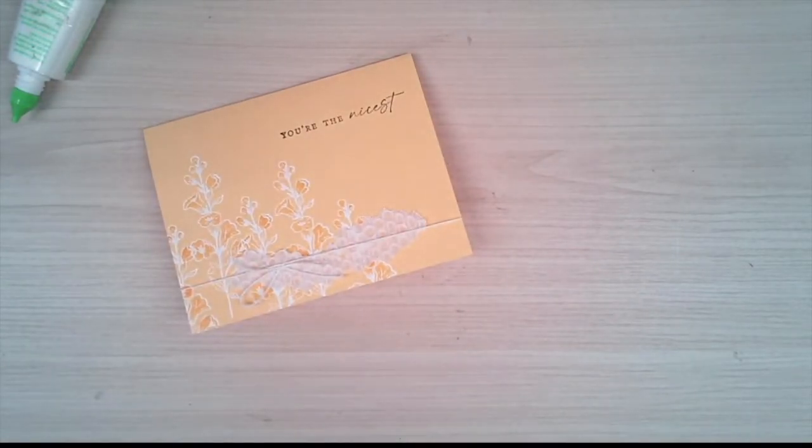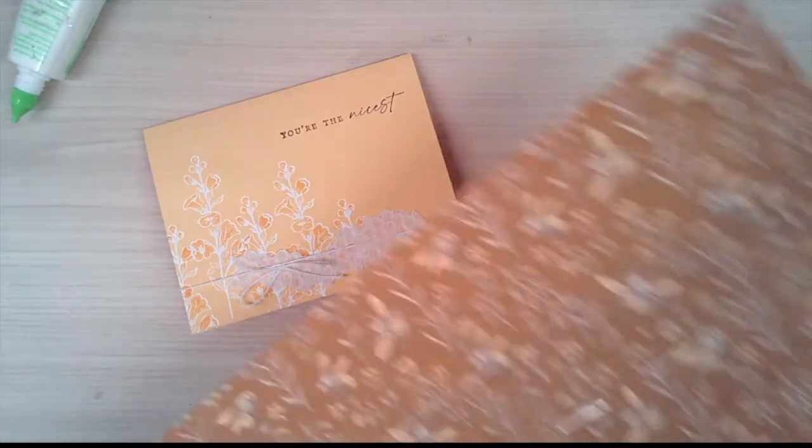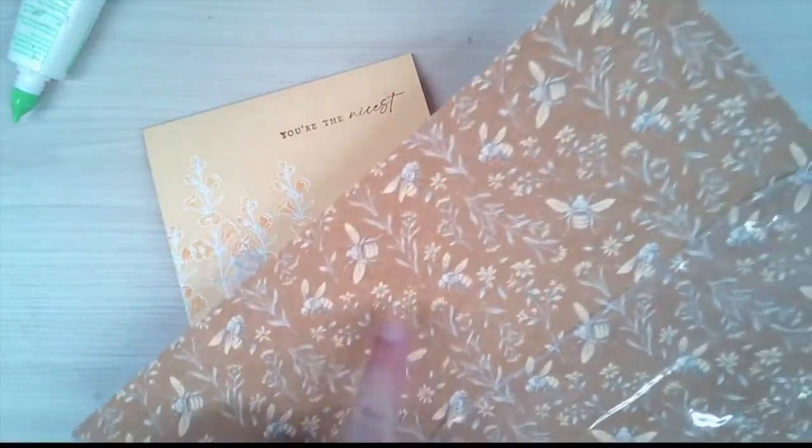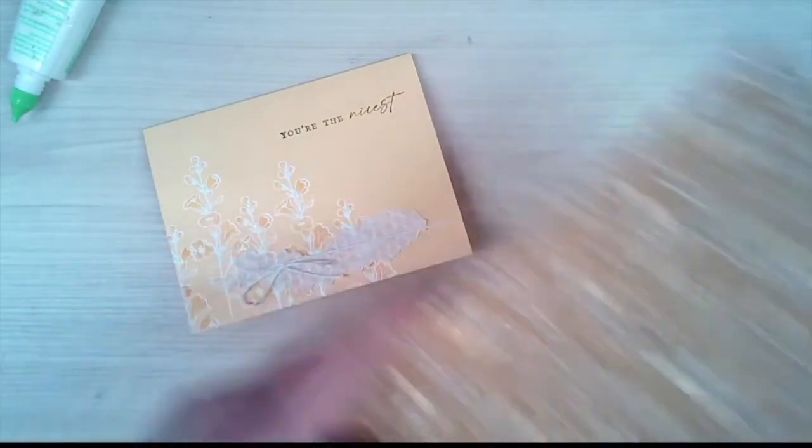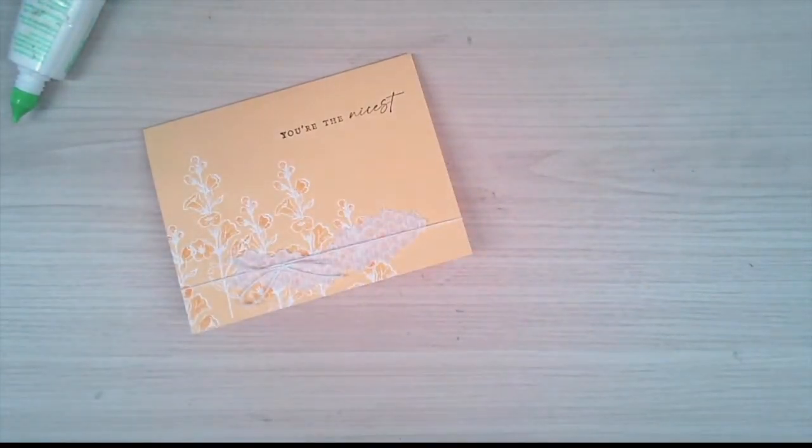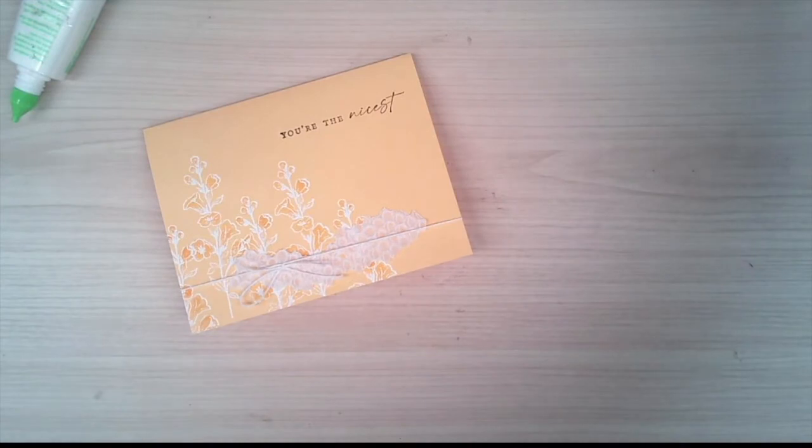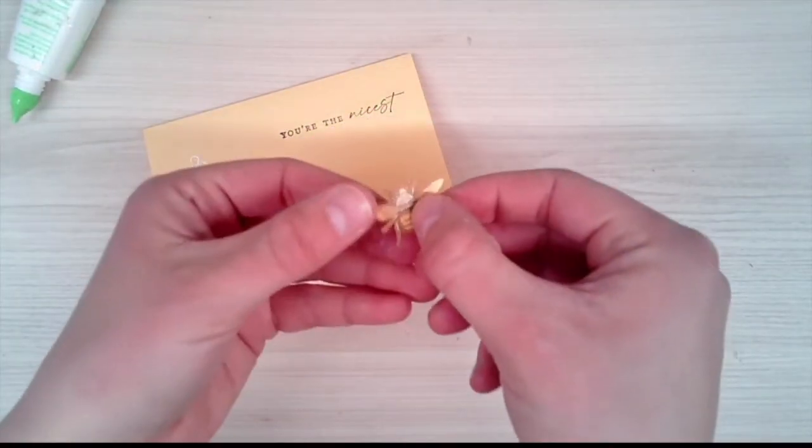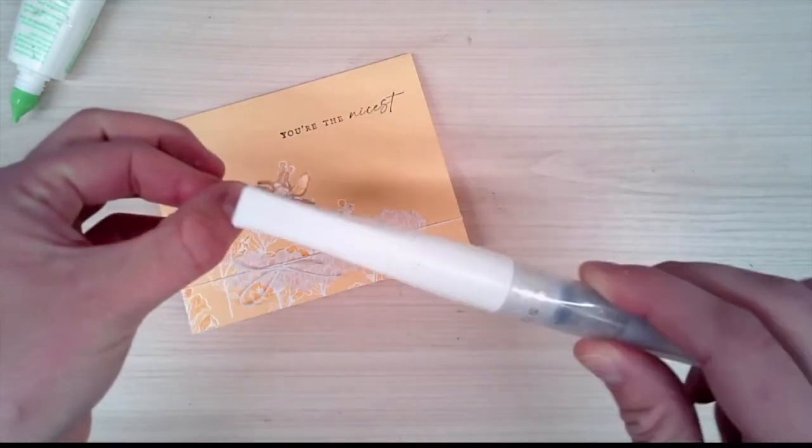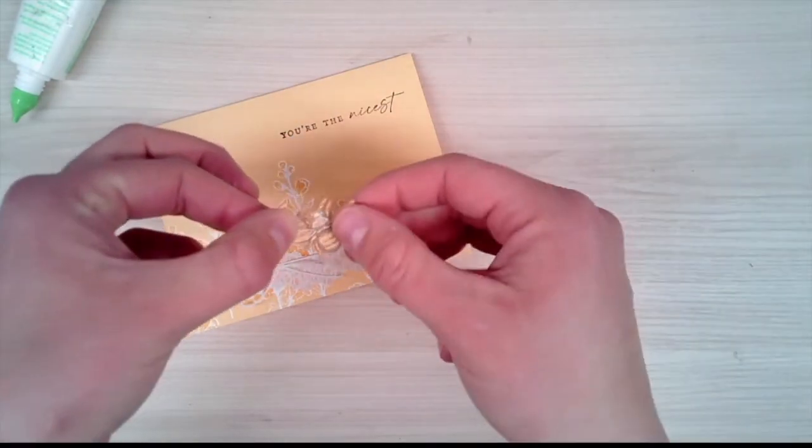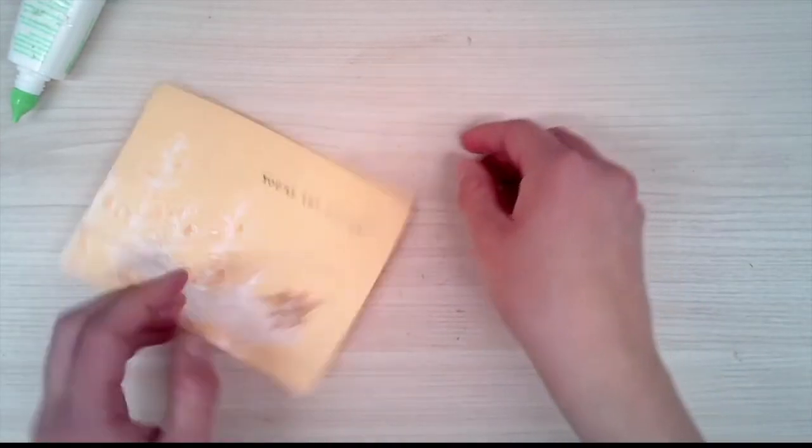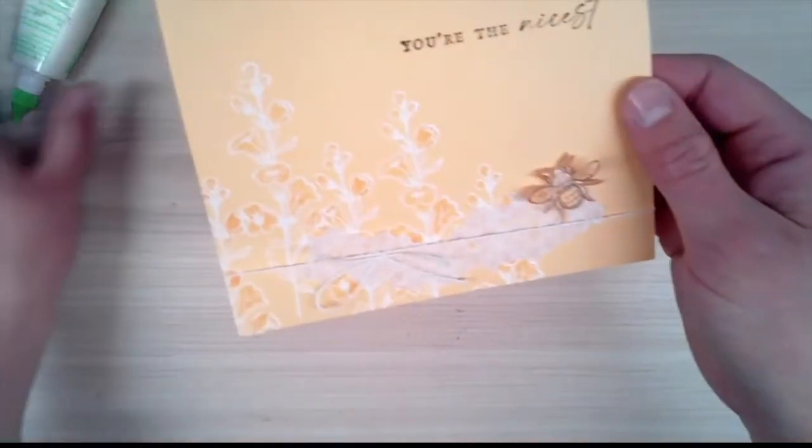I'm going to slide this bow over just a smidge. I took some of the Heart and Home DSP and thought these bees were pretty cool, so I fussy cut one of the bees out. I also took some Wink of Stella and went over the bee, then put a dimensional on the back and popped him on there like he's flying around the flowers.